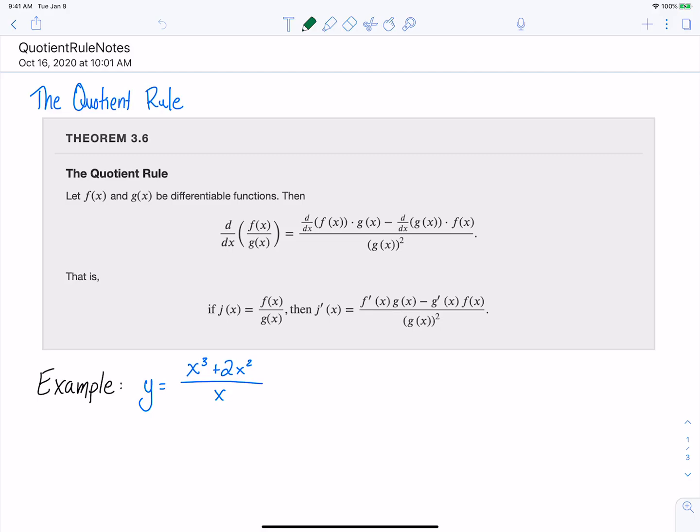Another type of combination of functions that we can have is if we take two functions and divide them. So here we are with the quotient rule. Quotient just means divide.